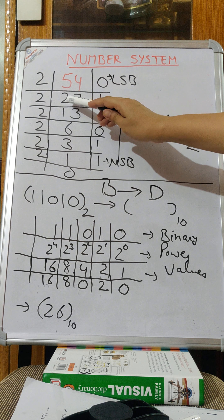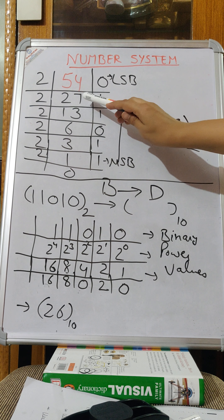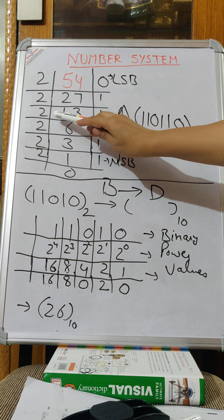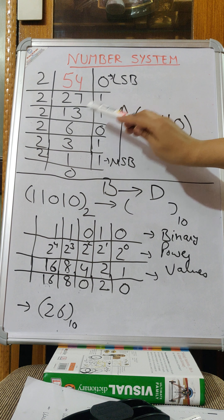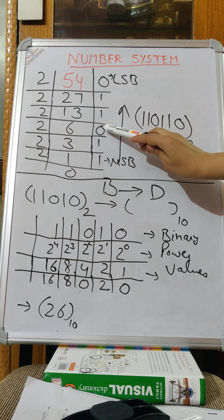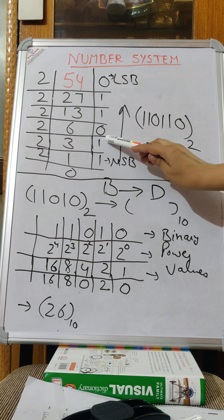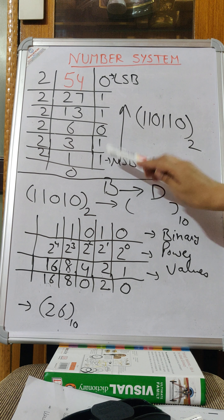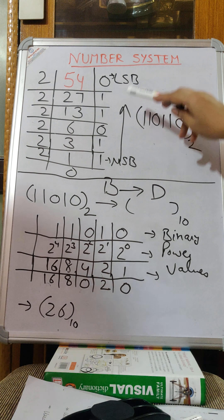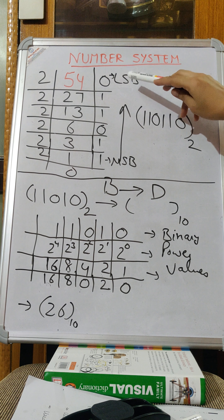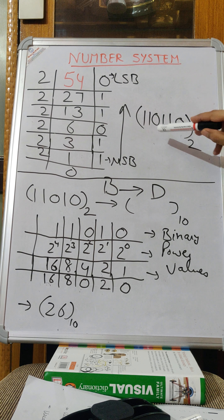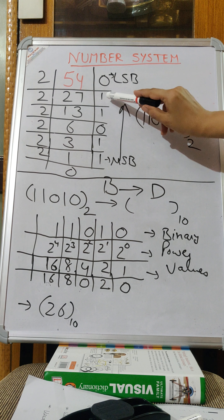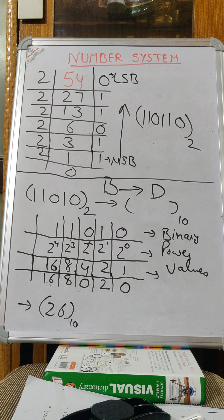Divide 54 by 2 — quotient 27, remainder 0. Write 0. Divide 27 by 2 — quotient 13, remainder 1. Divide 13 by 2 — quotient 6, remainder 1. Divide 6 by 2 — quotient 3, remainder 0. Divide 3 by 2 — quotient 1, remainder 1. Write 1. At the last write quotient 0 with remainder 1. The last one is the most significant bit and the top is least significant bit. Reading from bottom to top: 1 1 0 1 1 0 is the binary conversion of 54.